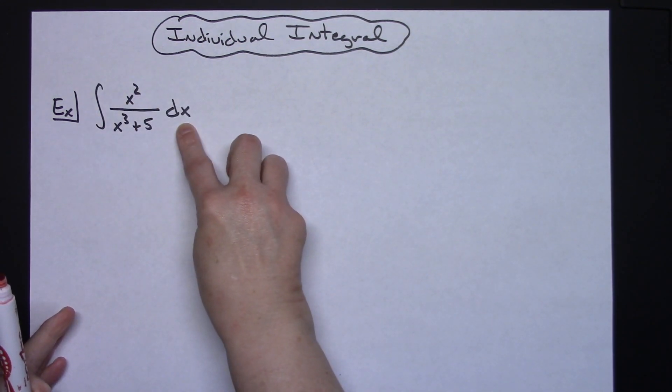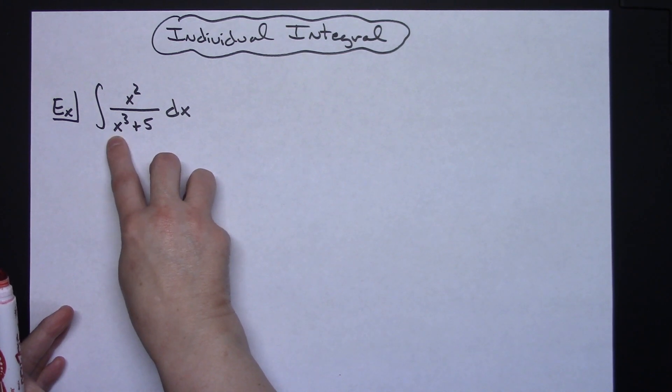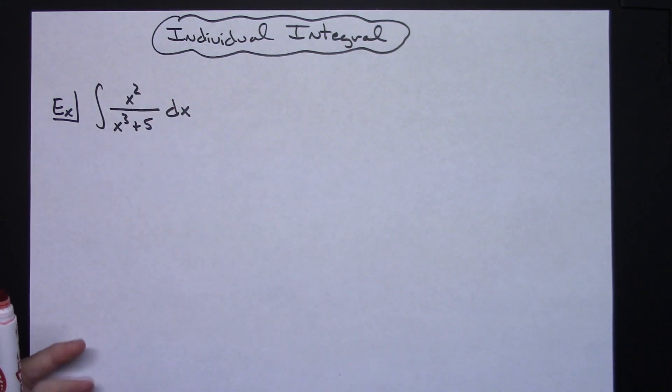So I've got the integral of x squared over x to the third plus 5. I'm going to look at this denominator here and I'm going to see that if I take the derivative of that x to the third then I'm going to have an x to the second.